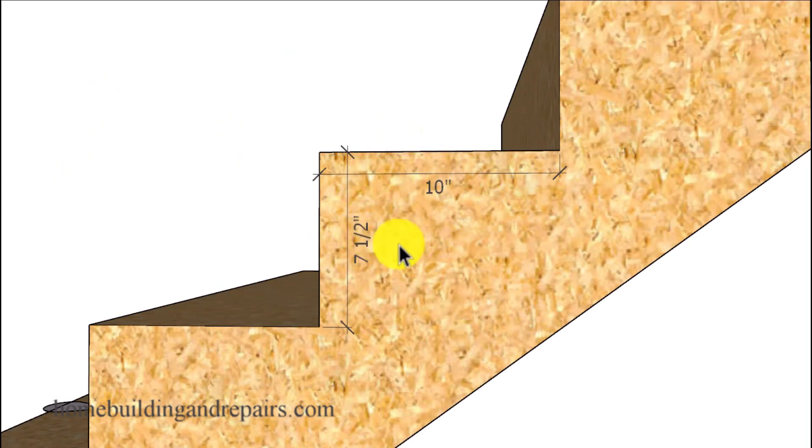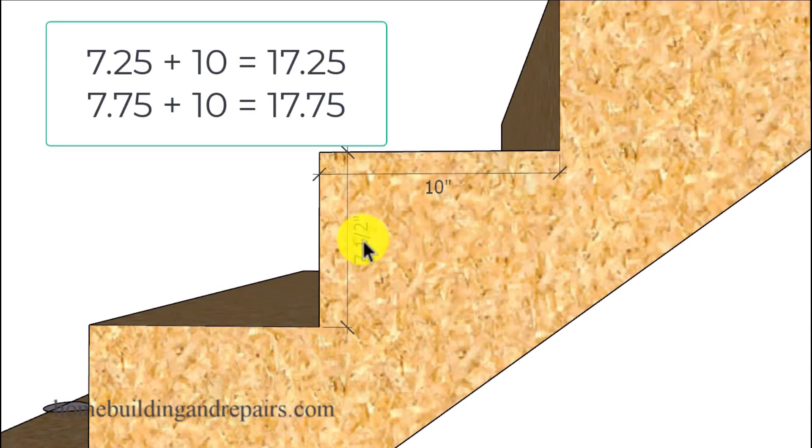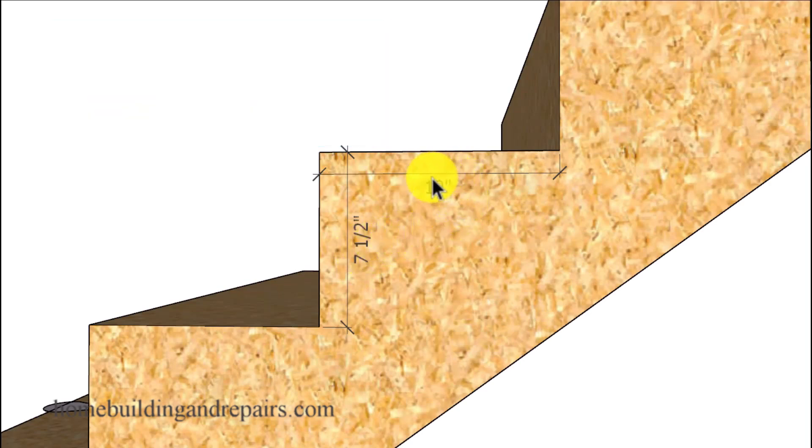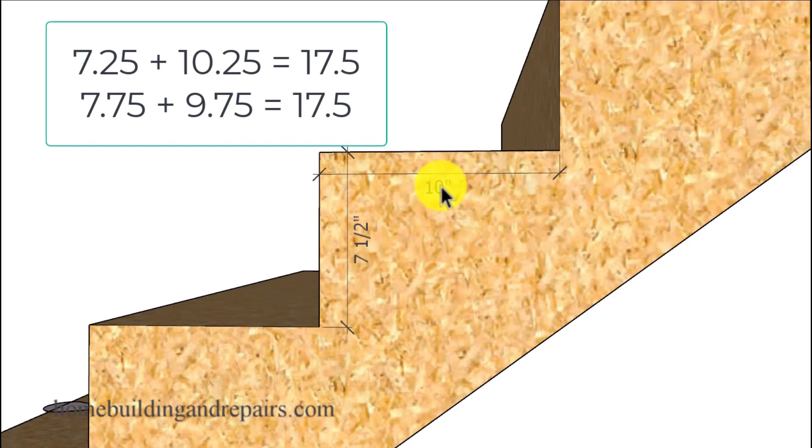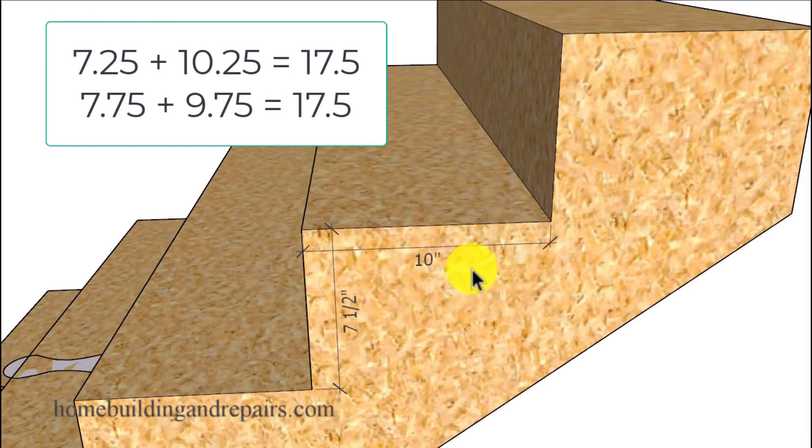Now it doesn't have to be 17 and a half inches just as long as it's close to it. So for example if I had a seven and a quarter inch riser or a seven and three quarter inch riser, I'm only going to be a quarter of an inch off in my measurement unless I increase or decrease the width of the tread. And you can actually do it if you want to if you're a firm believer in this rule.